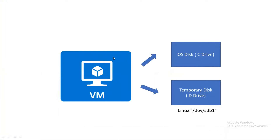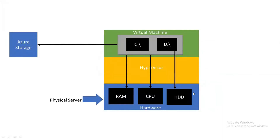Coming back to the PPT: when I created my virtual machine VM1, there were two drives — one is the OS disk, which is my C drive, and the second was the temporary disk assigned as the D drive. In the case of Windows you will see it as a D drive, but in the case of Linux it will be mounted as /dev/sdb1. So this is your temporary storage.